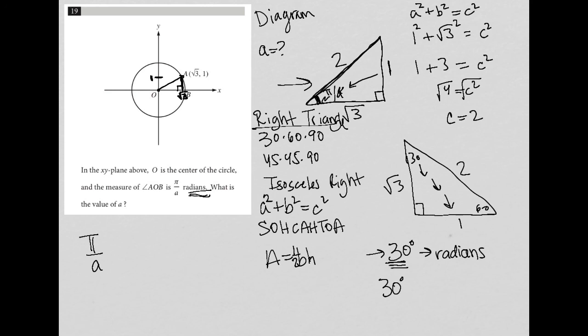by a conversion factor, which is going to always be pi over 180, right? If we're converting from degrees to radians, we multiply degrees by pi over 180. This simplifies to pi over 6, and therefore,